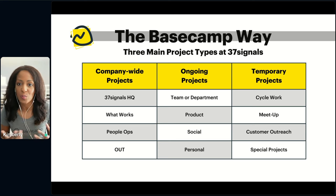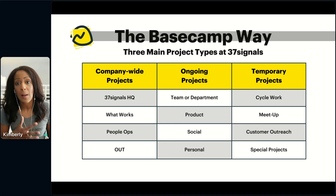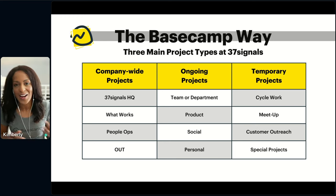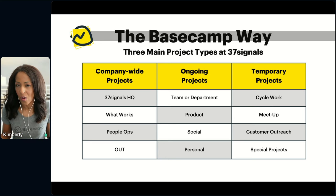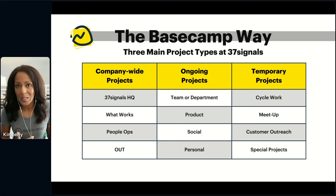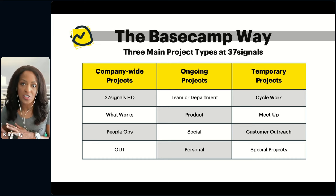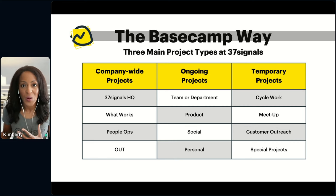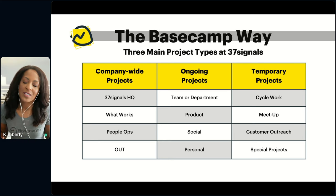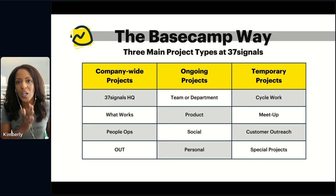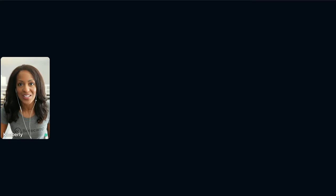We also have projects like people operations for HR documents, and a project called Out where people put their vacation schedule. Then we have ongoing projects — things like team or department projects for marketing, ops, or customer support. We also have projects by product: Basecamp versus Hay versus Campfire each have their own separate projects. And then we have some fun social projects and personal projects — almost all of us have a private project just for our own documentation. The third type is temporary projects with a start and end date, like cycle work, meetups, or customer outreach initiatives, which get archived once they're done.